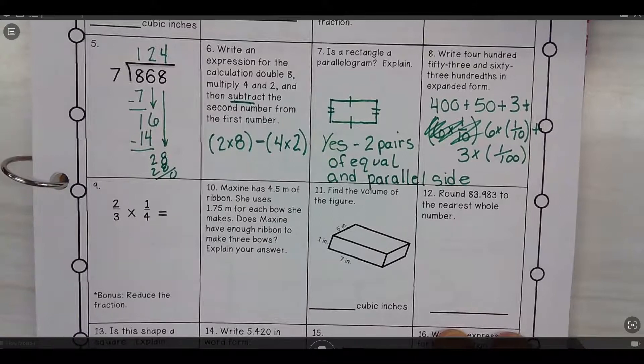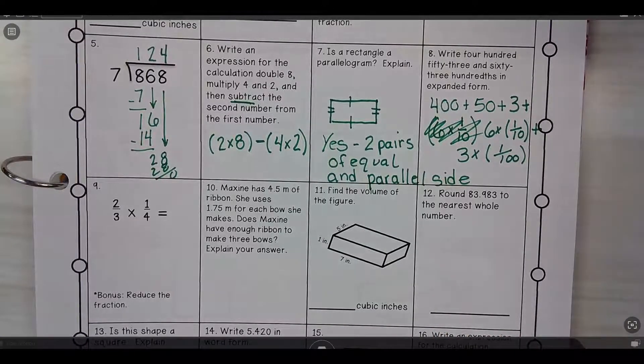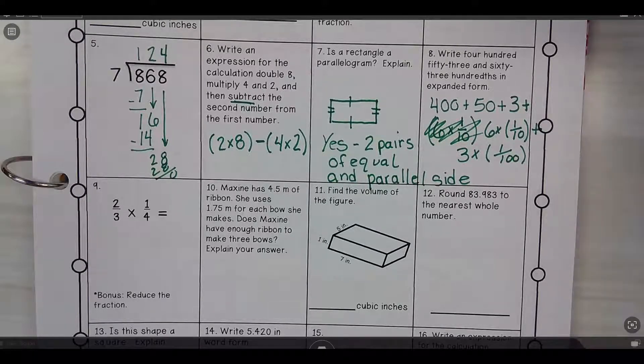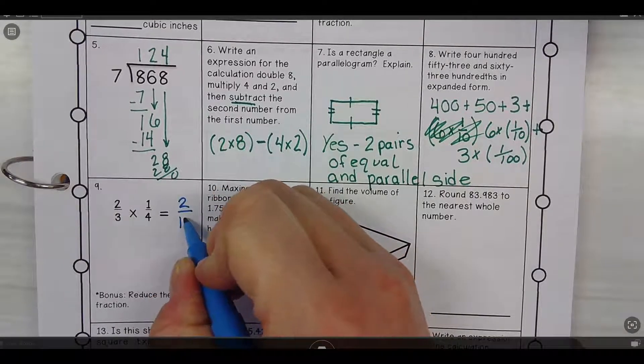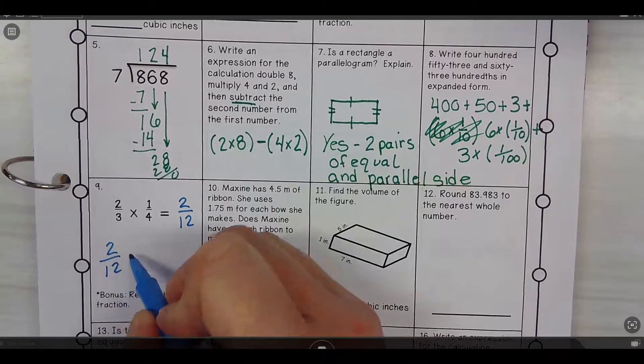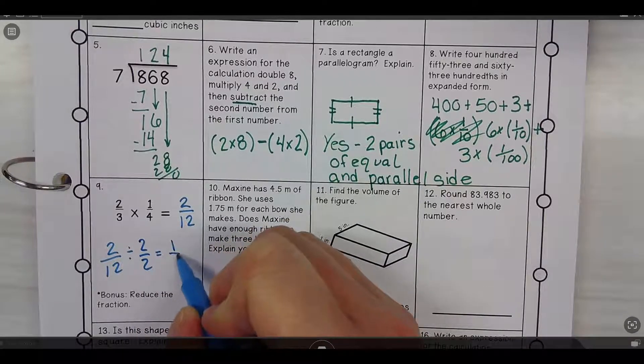We have two-thirds times one-fourth. Two times one is two, and three times four is twelve. So two times one is two, three times four is twelve. That would be reduced by two, which would make one-sixth. Nice. Divide by two over two gives us one-sixth.